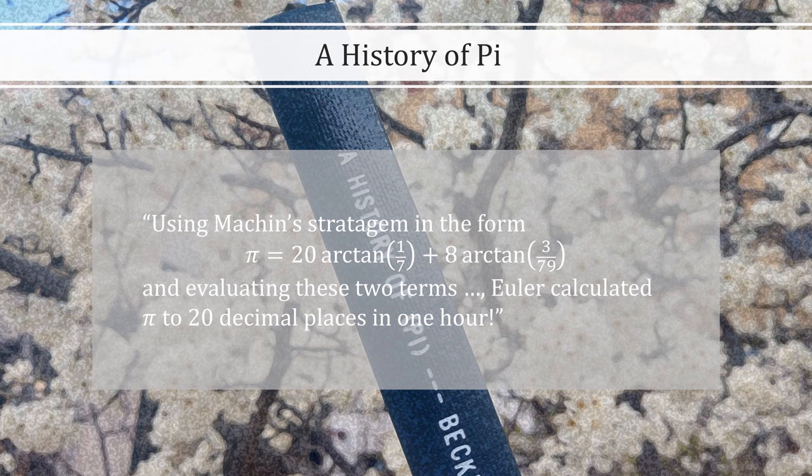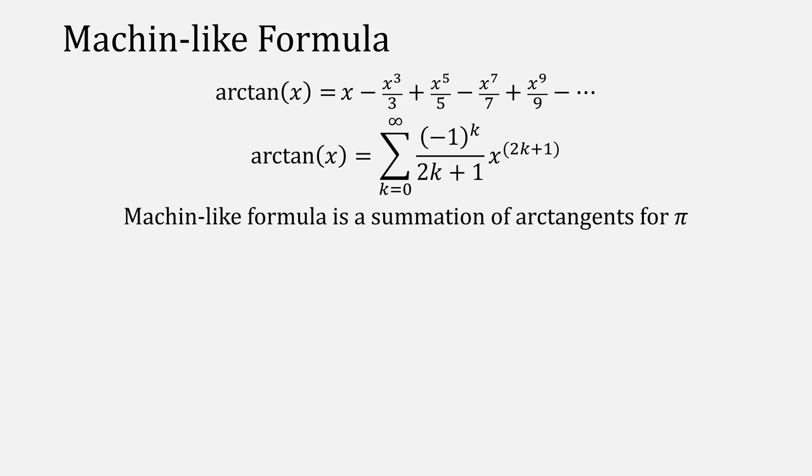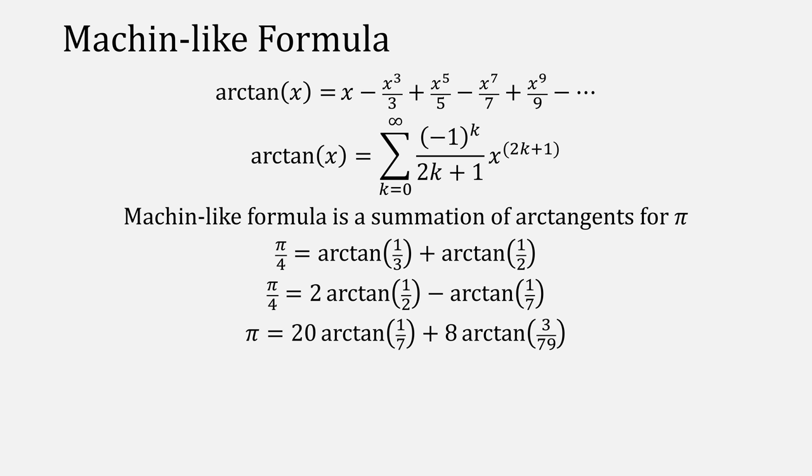Beckman again, using Machin's stratagem in the form Euler's equation, and evaluating these two terms, Euler calculated Pi to 20 decimal places in one hour. But what's a Machin stratagem? Recall our arctangent summation. We can rewrite it as a summation. A Machin-like formula is the summation of arctangents for Pi, such as a third plus a half, or two halves minus a seventh, or Euler's formula. More formally, we can represent it like this.